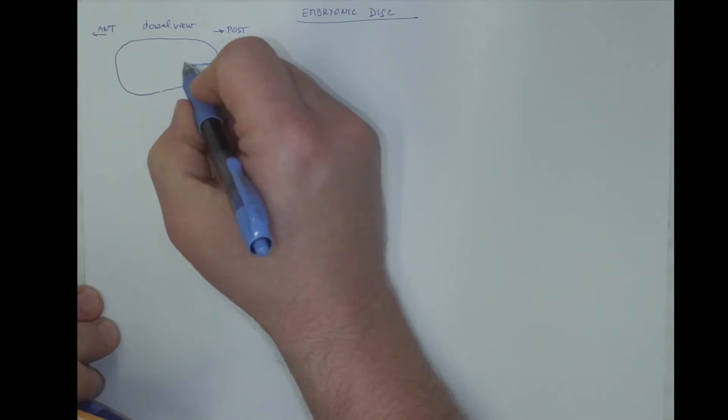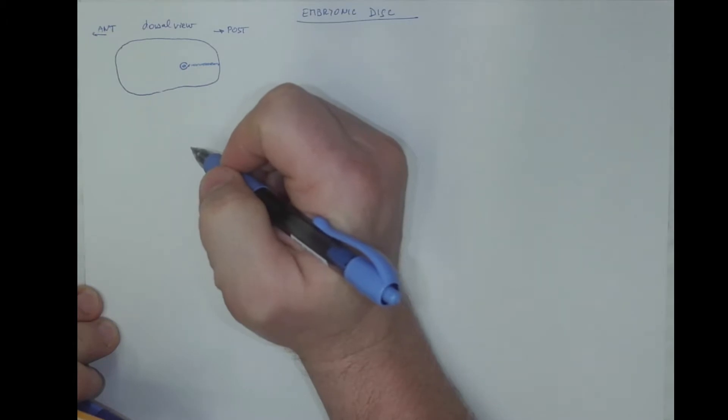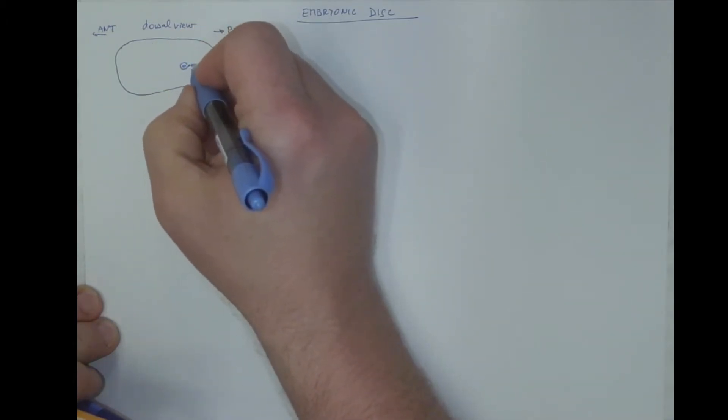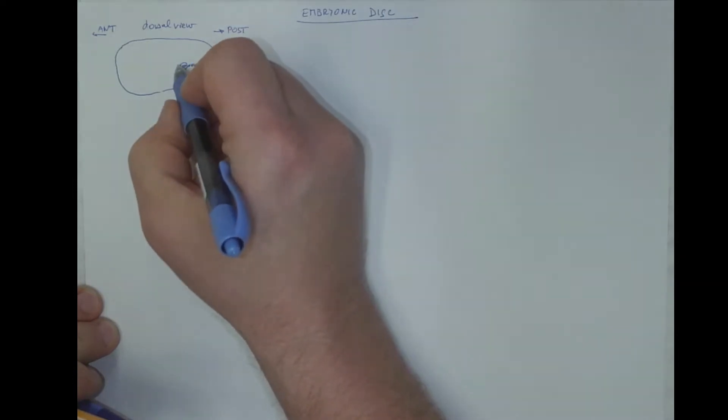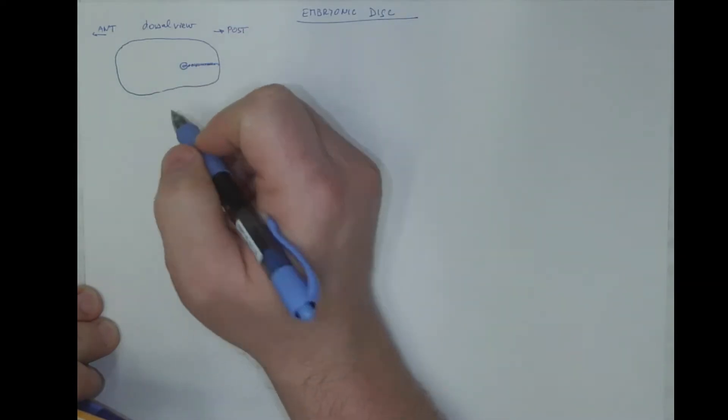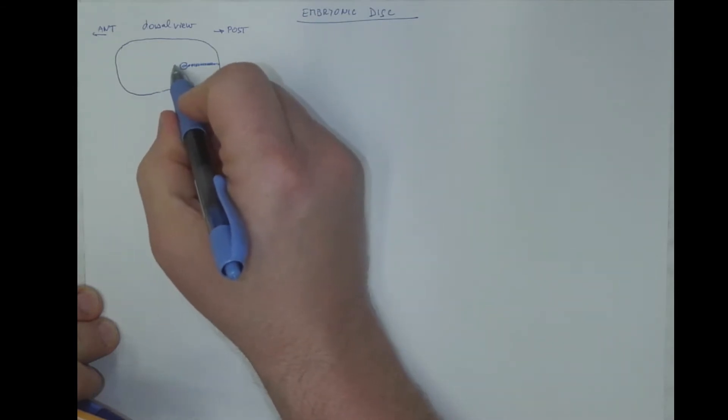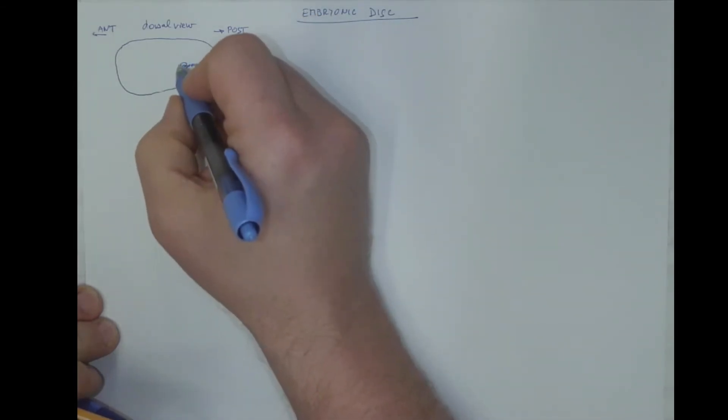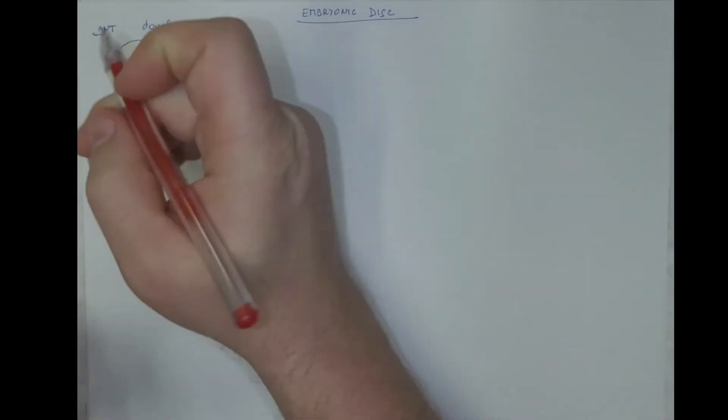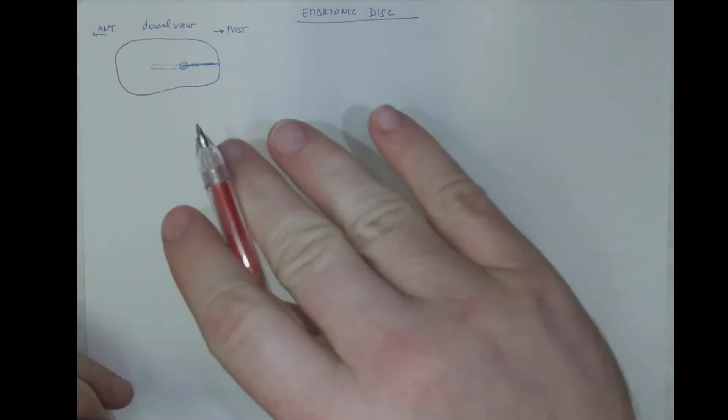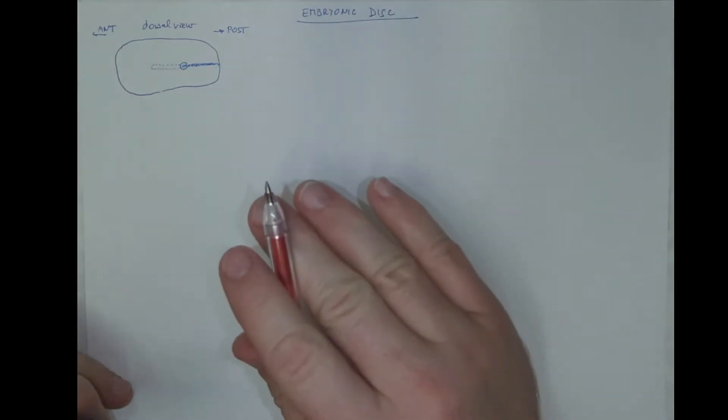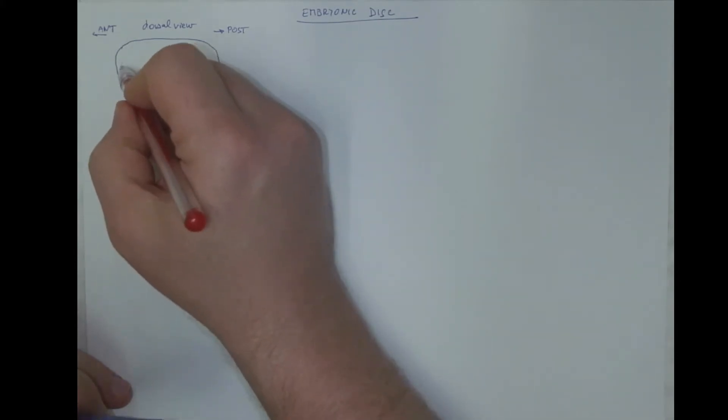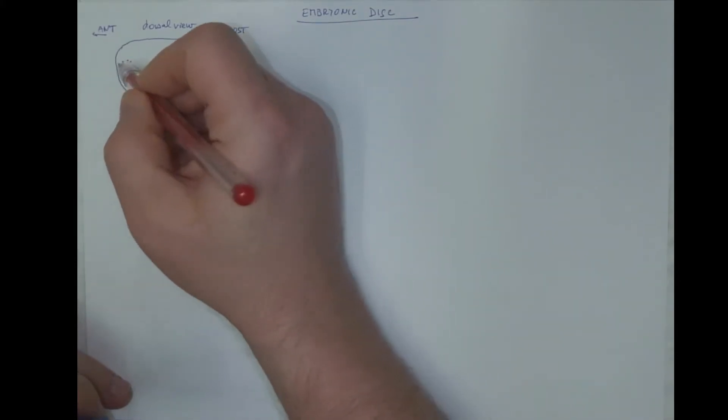It ends with a knob-like structure called the primitive node, which is a source of growth of a finger-like projection that grows anteriorly. However, it's not in this plane but below the epiblast. That's why I will draw it with a dotted line. And it's heading towards a thickening of the epithelium of the yolk sac, which is below but would be transparent here as the precordial plate.